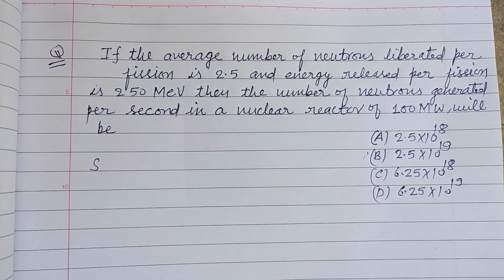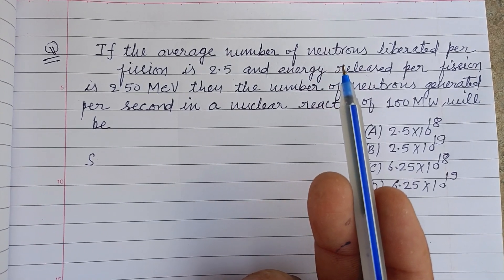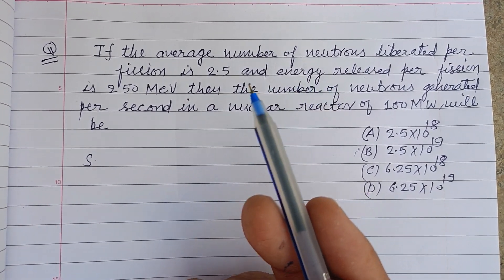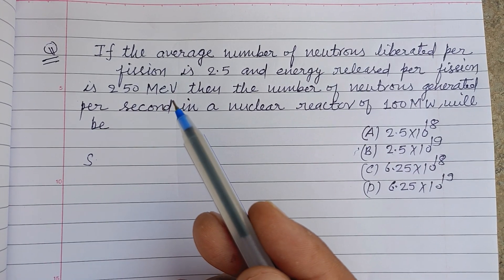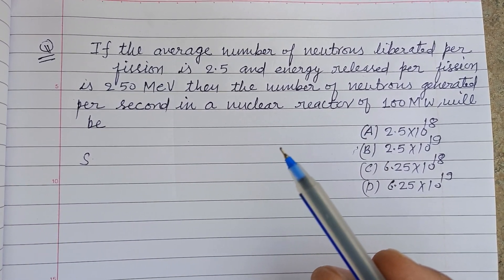Hello viewers, warm welcome to this YouTube channel. The question is: if the average number of neutrons liberated per fission is 2.5 and energy released per fission is 250 million electron volts, then the number of neutrons generated per second in